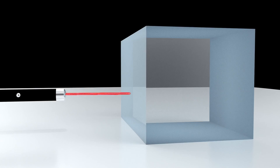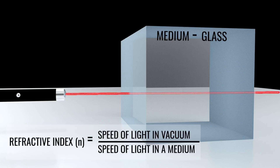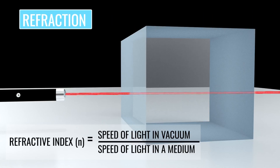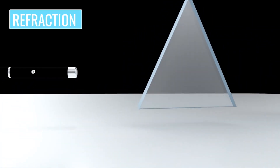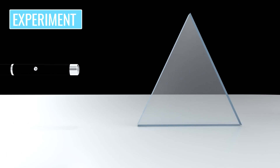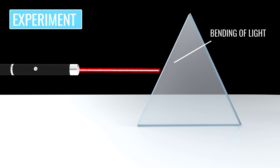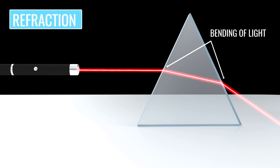The speed of light changes when it passes through a medium, and this change in speed is expressed by the refractive index. This variation in the speed of light leads to another interesting phenomenon: refraction. To understand what it is, let us carry out an interesting experiment. In this experiment, light passes through a prism. You can see that at the interface, the light gets bent instead of going straight. This phenomenon is known as refraction.